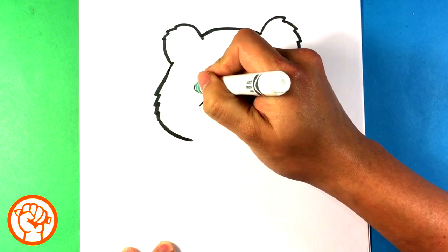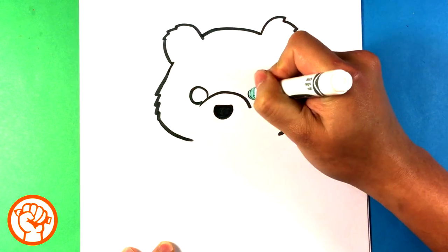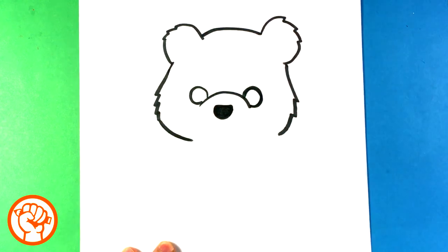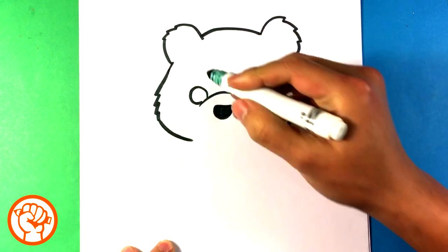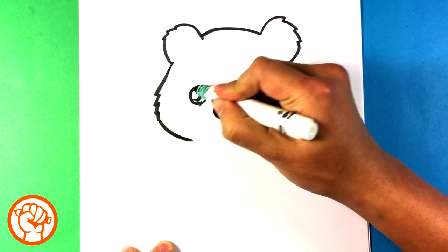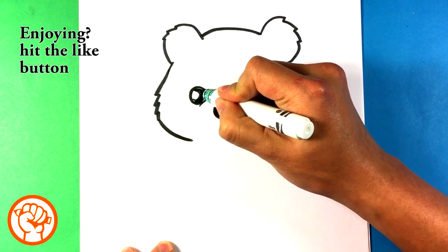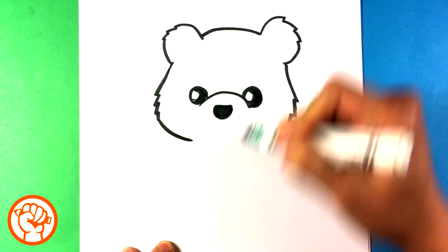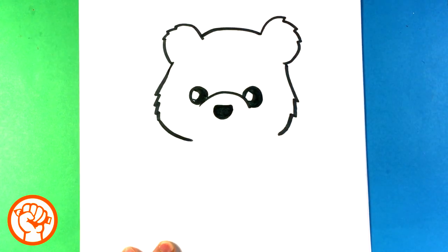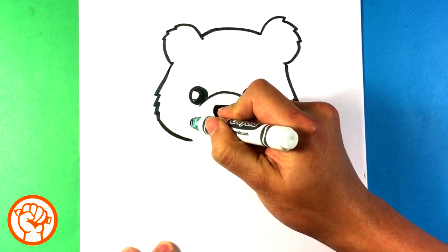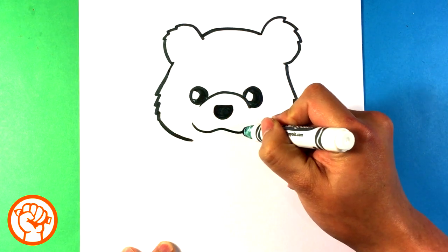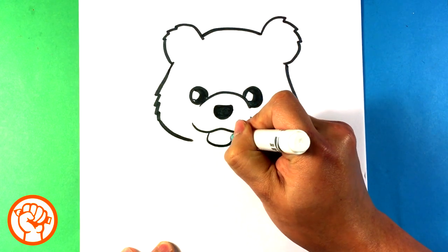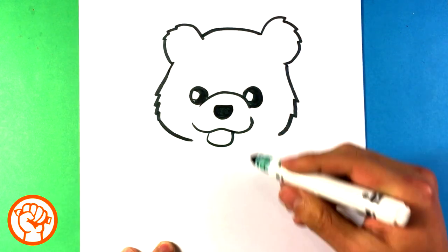Boo had big ol' eyes. And we're gonna throw some highlights in here. Boo was all about highlights. You throw a big one right there. And I'm gonna throw an open mouth here. Smiley Boo with his tongue out, happy dog.